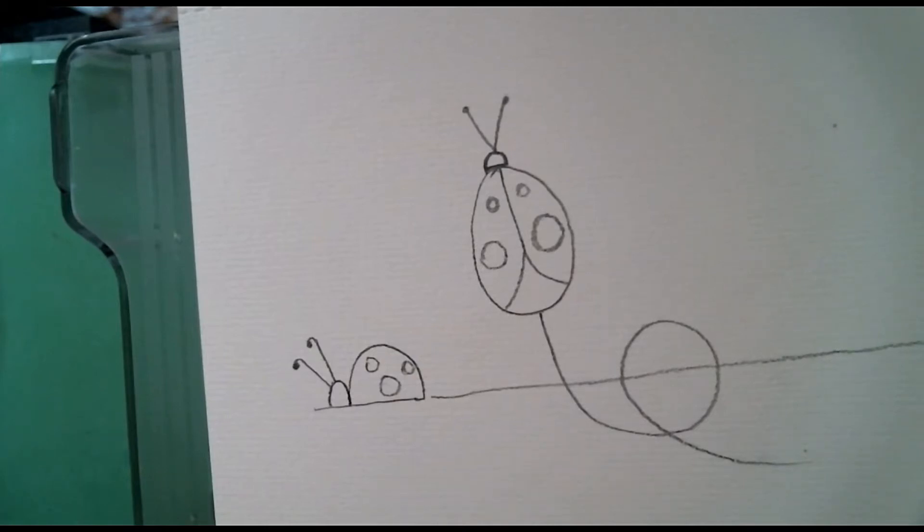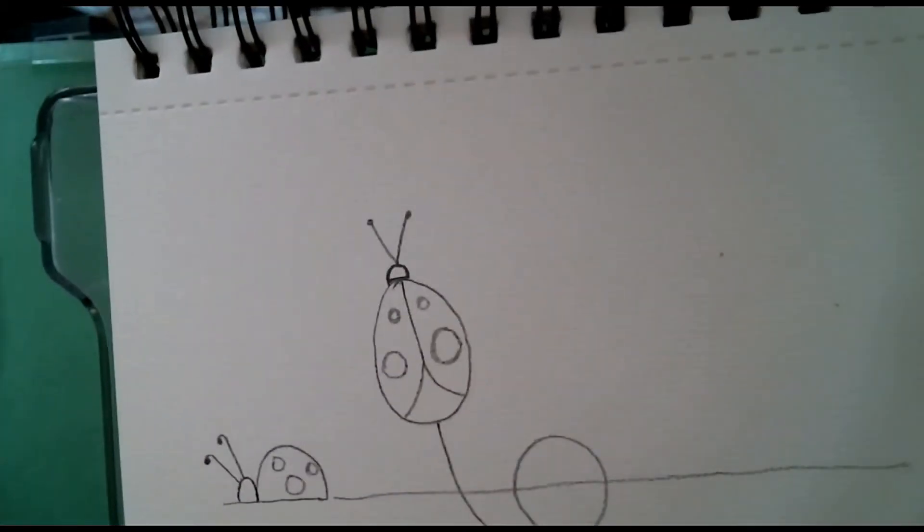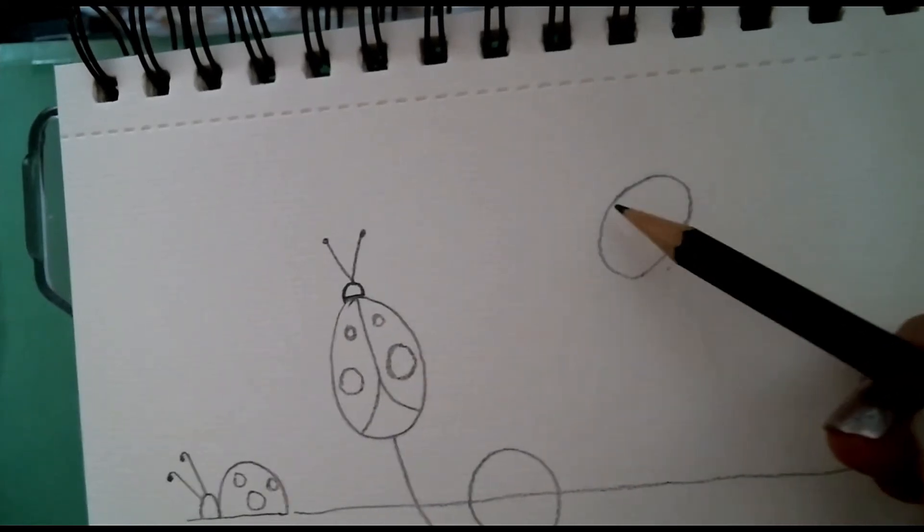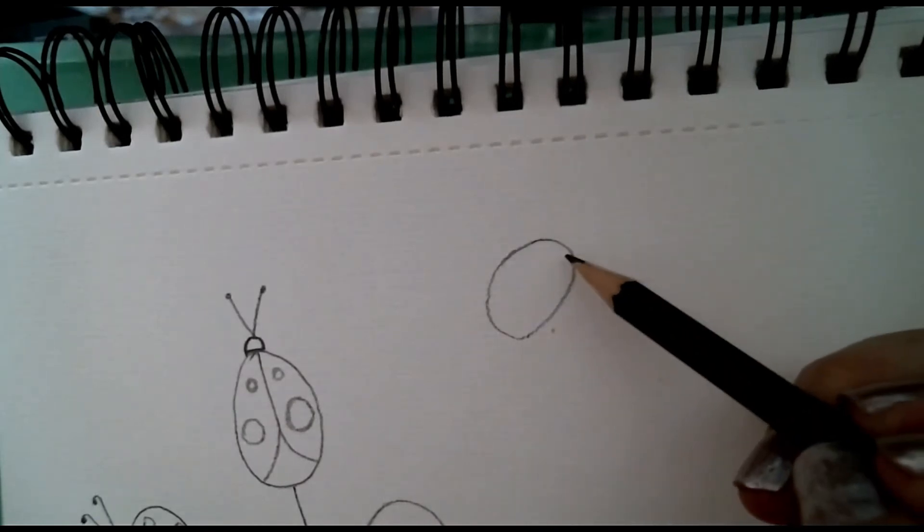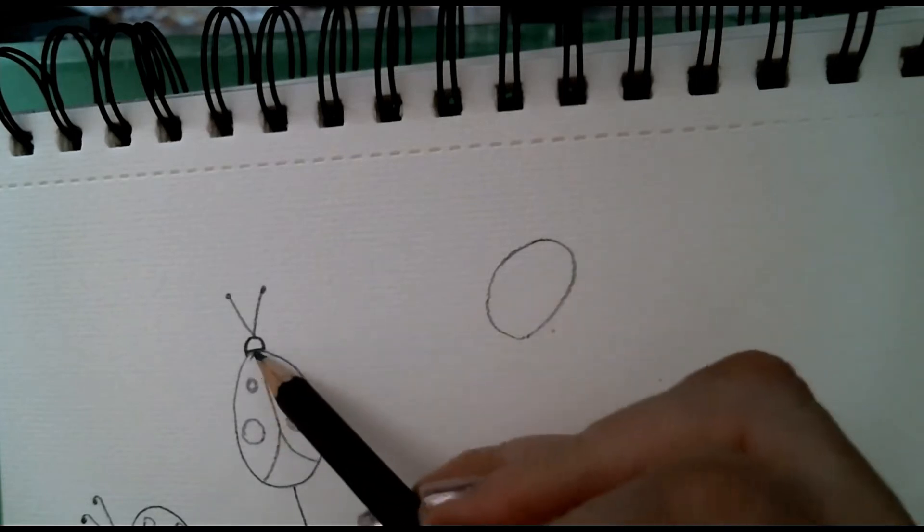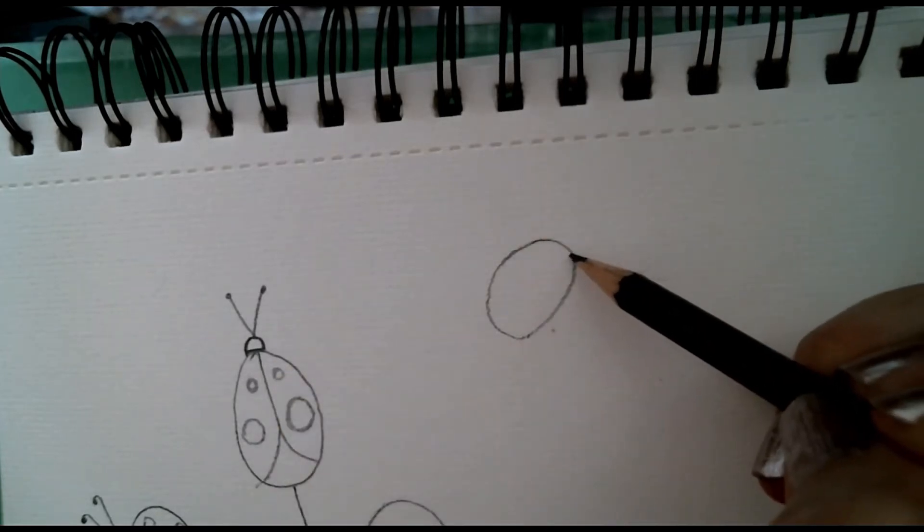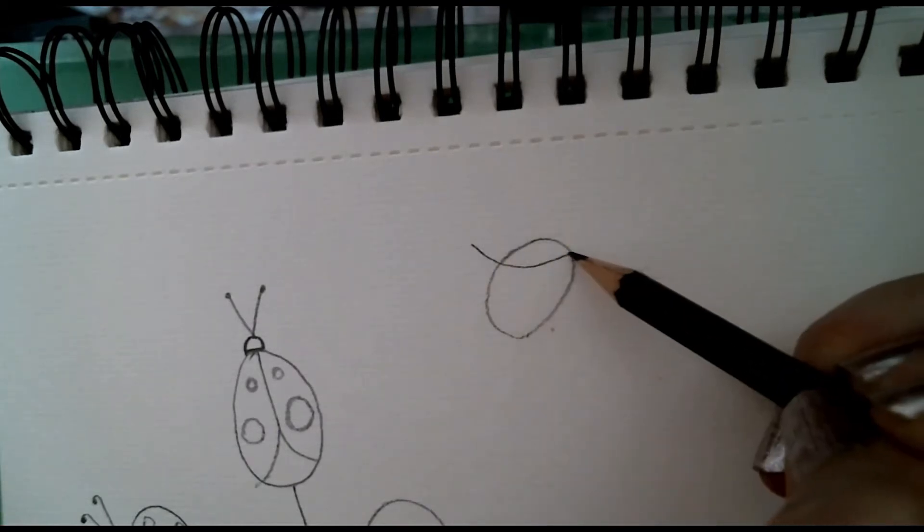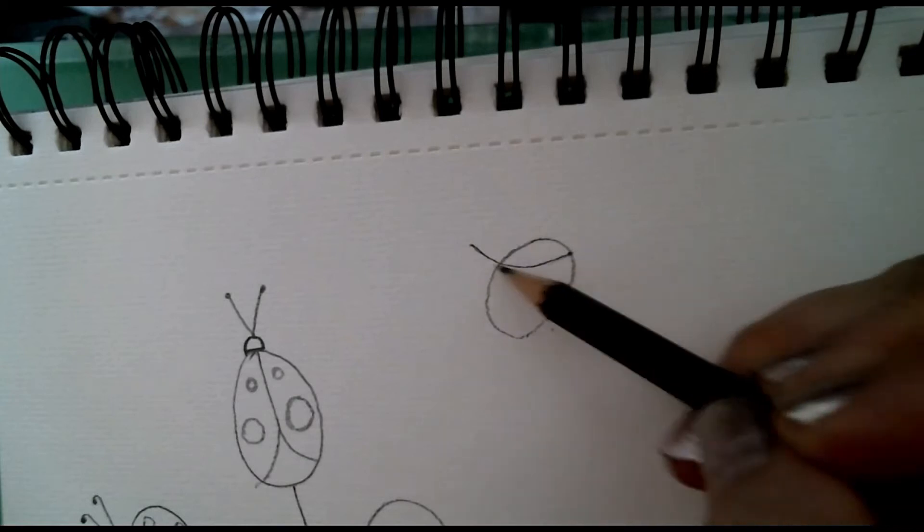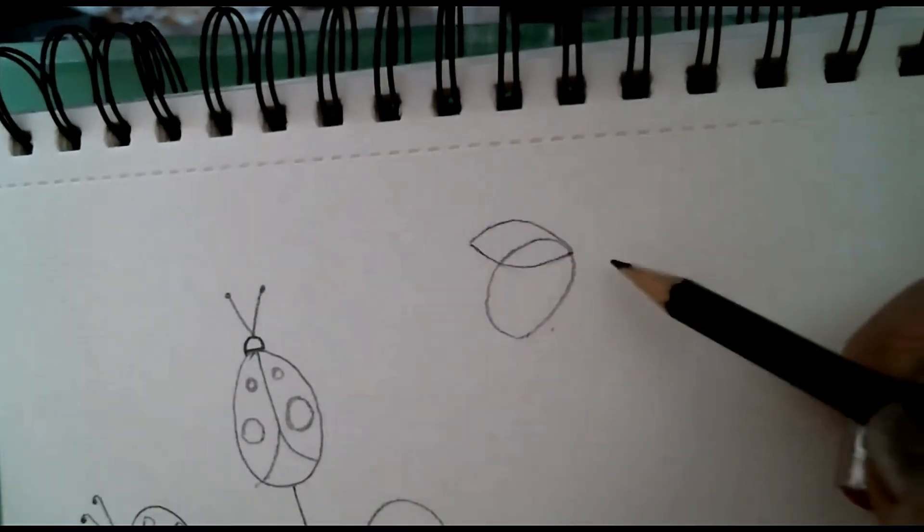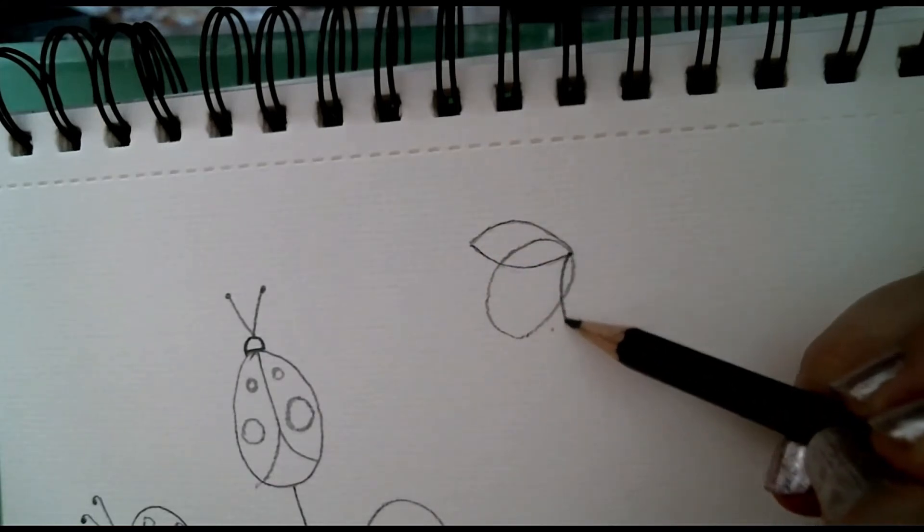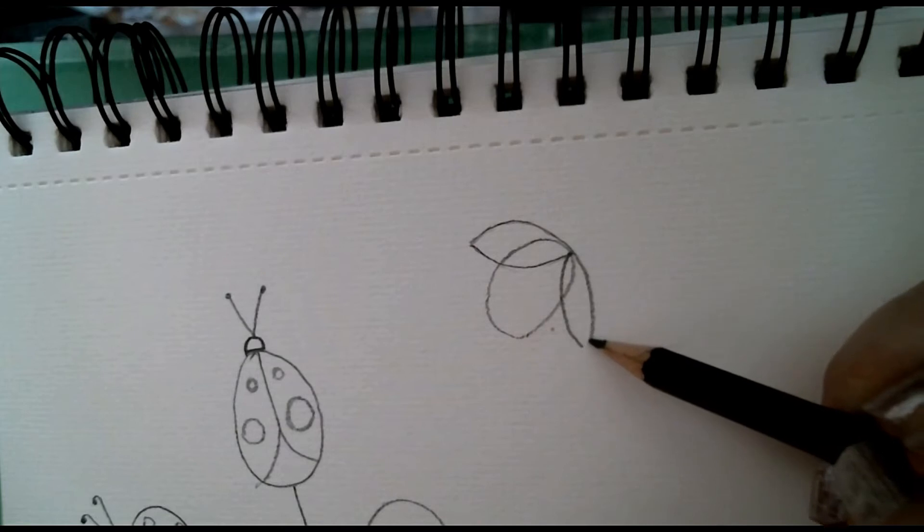Now the third one we're going to do is a flying one. So I'm going to still start with my oval or circle, however you want to do it. And instead of drawing his wings down like this, I'm going to start from the top up here and I'm going to draw it up and out. So just a little half arc, a little arc there and an arc on the top like that to make his little wing and I'm going to start from here and do an arc down and an arc down.